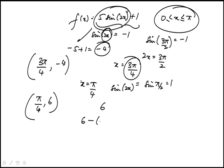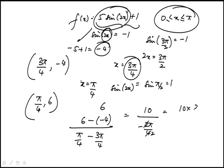To find the slope, we take the difference in the y values over difference in the x values. This is going to be 10 over minus 2π/4, which becomes 10 over minus π/2. So this is 20 over π. Don't forget the minus sign. So the answer is minus 20 over π, which is choice A.